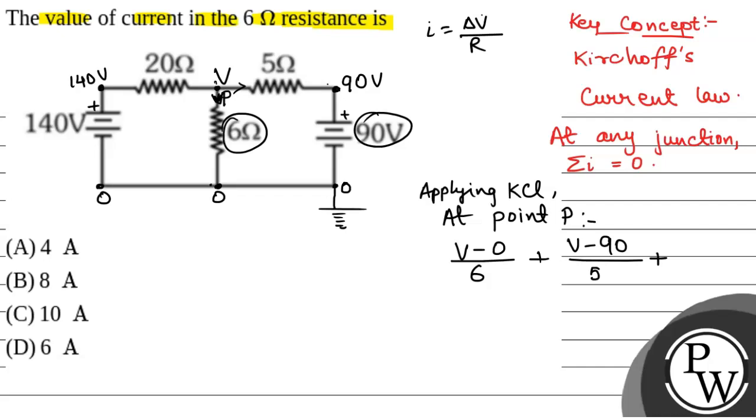And, similarly, plus V minus 140 by 20. So, this will be V minus 140 by 20. This will be the 3 currents flowing through this point P.